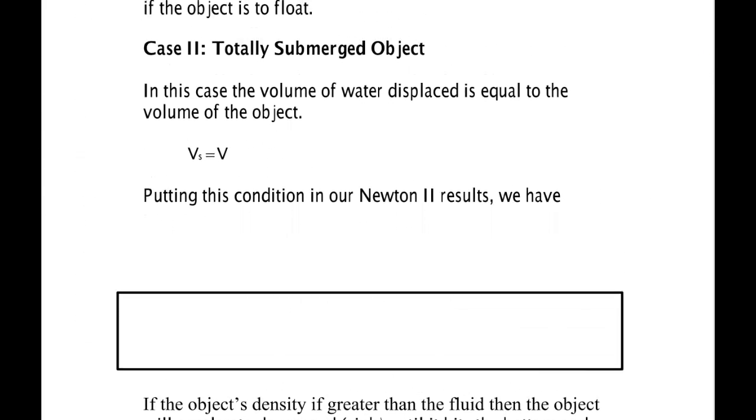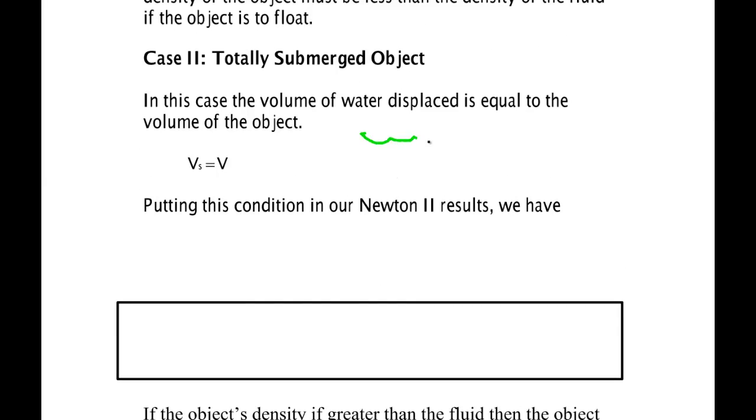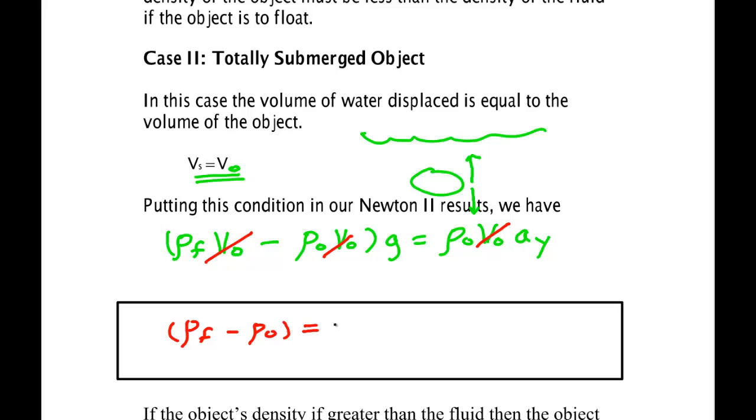Now let's take another case: what if we totally submerge the object? So now we have the object like this, we put it underneath—maybe we're holding it—and then we take our hand off. Will it go up, will it go down, or stay the same? We could figure this one out as well. ρ of the fluid—now in this case we're totally submerged so the submerged object has the same volume as the object—and we have the density of the object times V_0, we have g, is equal to ρ_0 V_0 times a_y. And we can see that we can cancel the volume of the object, and this gives us that the density of the fluid minus the density of the object is equal to the density of the object times a_y, and we have a g there.